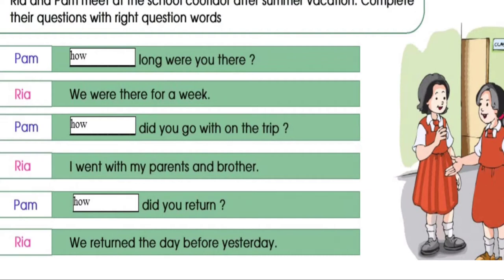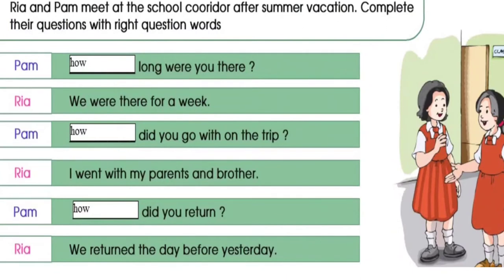Return the day before yesterday. Here you write 'when' — W-H-E-N. This is also wrong; they have kept 'how' everywhere. Write 'when.' When did you return? W-H-E-N. We returned the day before yesterday, she says.